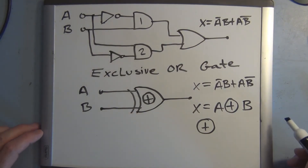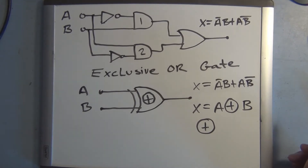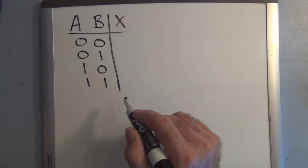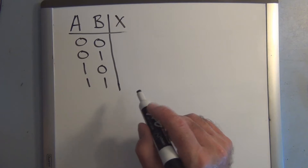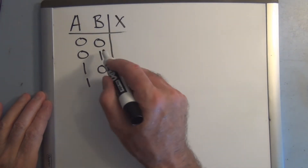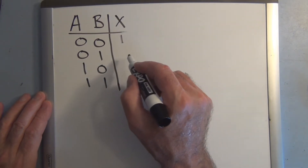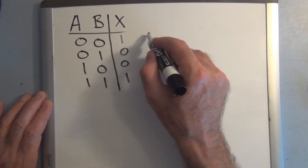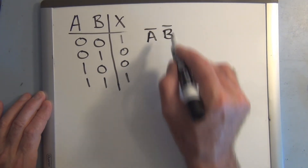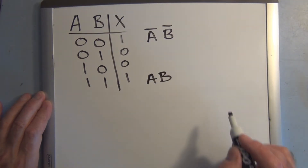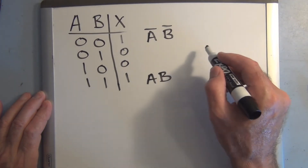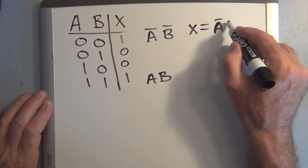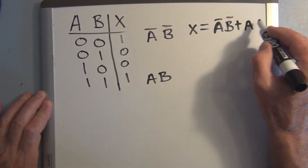The second operation we want to look at is detecting when the two inputs A and B are at the same level or equal to each other. The truth table for a circuit that produces a high output whenever the two inputs are at the same level has a high output when A and B are both 0, and when A and B are both 1. The AND terms are A-not-B-not and A-B, so the total output expression is X equal to A-not-B-not OR A-B.